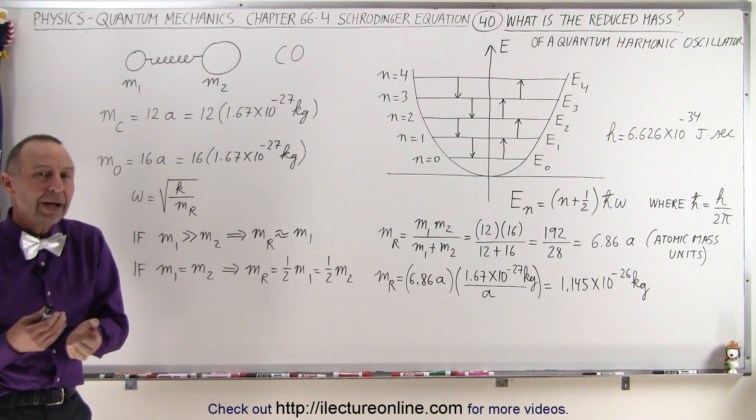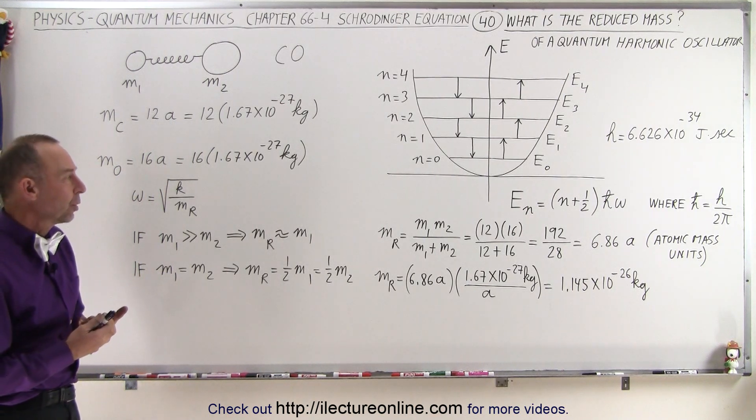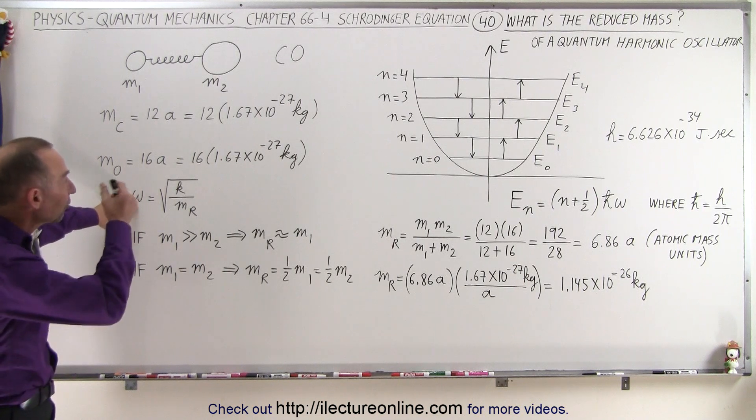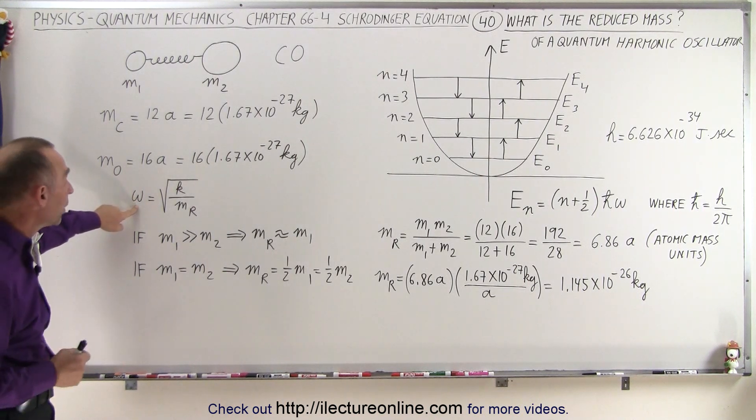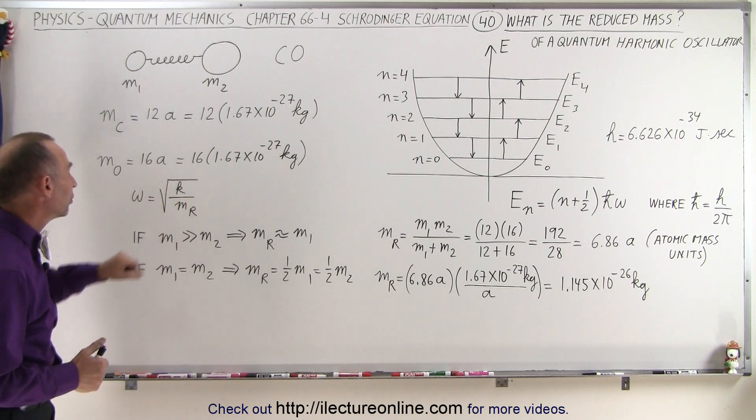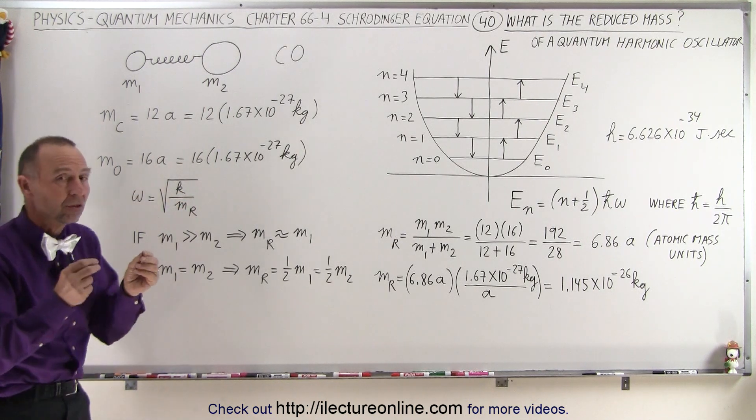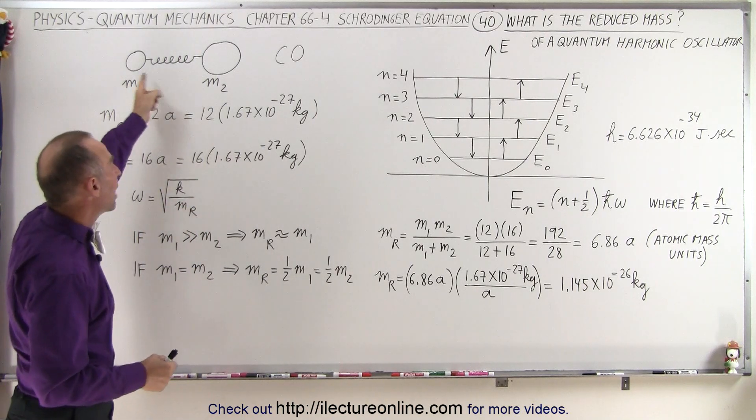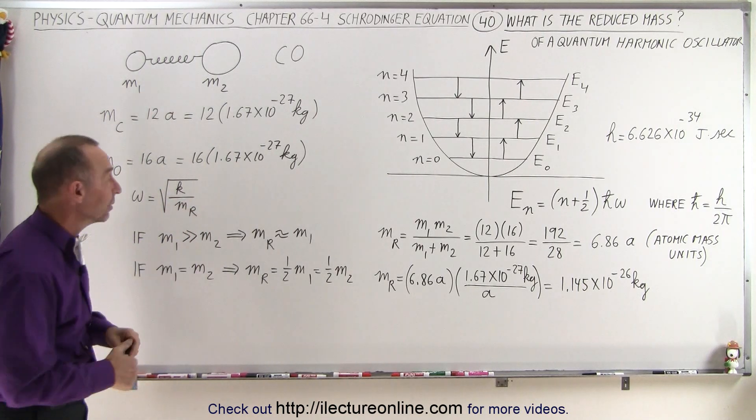So what do we mean by a reduced mass? Well, we realize that the angular frequency of an oscillator like that, a diatomic molecule, is equal to the square root of the spring constant divided by the reduced mass. And the spring constant is related to the intermolecular forces between the two atoms, and we'll talk about that a little bit later in more detail.